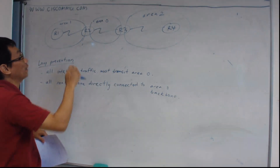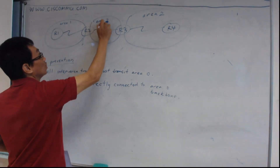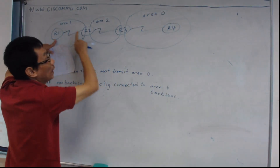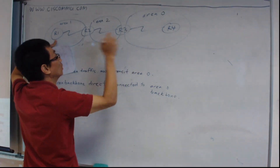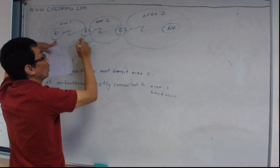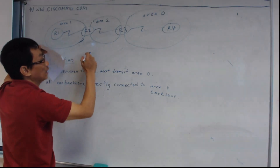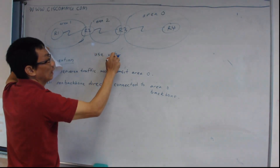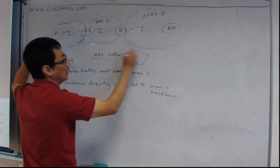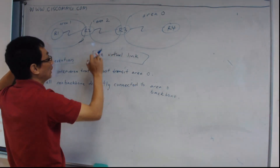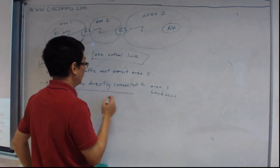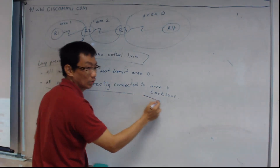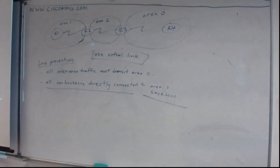You cannot have area 1, area 2, and area 0 arranged so that area 1 is not directly connected to area 0 — that topology is not allowed, unless you use a virtual link, which we will talk about later. In multi-area OSPF, all non-backbone areas must be directly connected to the backbone area. This is the rule.